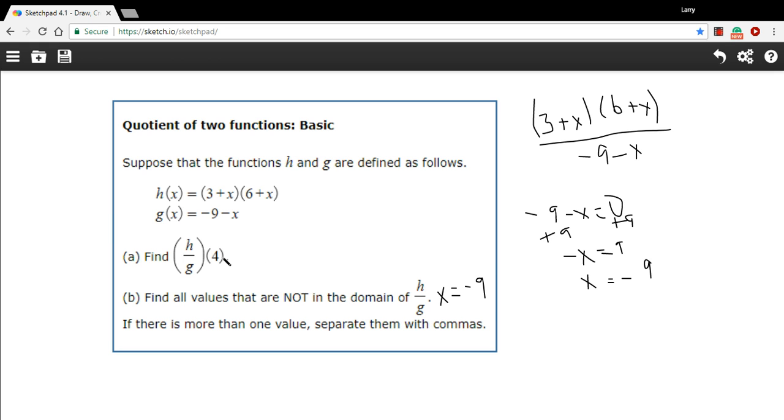Now, they're asking us to find h over g of 4. Well, here is h over g up here. And we just need to put 4 in here. So 3 plus 4 is 7. And 6 plus 4 is 10. So the top is 7 times 10. Negative 9 minus 4 would be negative 13.